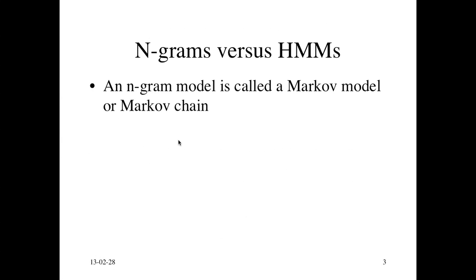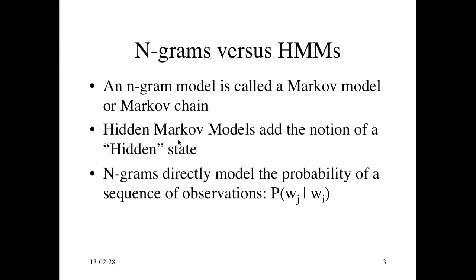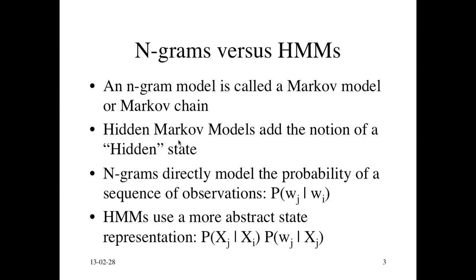So an n-gram model is called a Markov model. It's sometimes also called a Markov chain. And the hidden Markov model idea is to add a notion of this hidden state. So n-grams directly model the probability of a sequence of observations. So each word is generated given some previous word or words. And HMMs use a more abstract state representation. So it's always a state given a previous state, and then you generate a word given the current state.